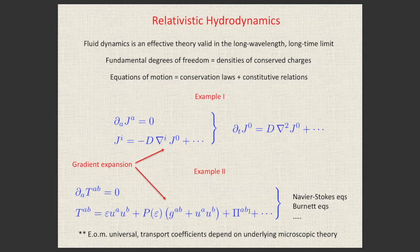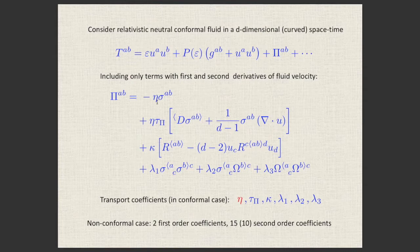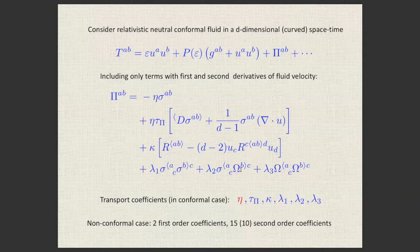The first-order term in the constitutive relation for T^{ab} has a completely universal derivative structure for any liquid or gas. What is not universal are the transport coefficients — eta, kappa, lambda, and others — which must be computed from the underlying microscopic theory. These coefficients are what make the hydrodynamics of water different from the hydrodynamics of quark-gluon plasma.